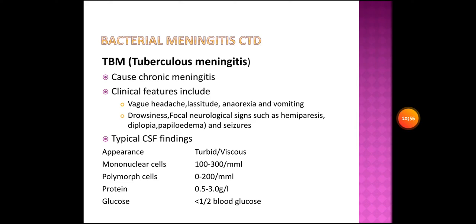Tuberculosis meningitis causes chronic meningitis. Clinical features include vague headache, lassitude, anorexia, vomiting, drowsiness, focal neurological signs such as hemiparesis, diplopia, papilloedema, and seizures. Typical CSF findings: appearance turbid or viscous; mononuclear cells 100 to 300 per mL; polymorph cells 0 to 200; protein 0.5 to 3 g/L; and glucose less than half of normal blood glucose.